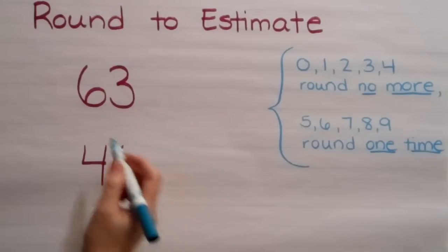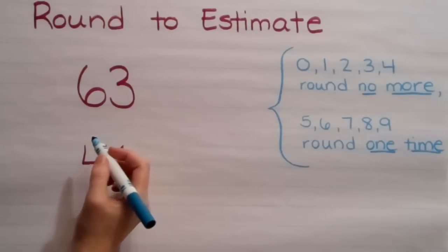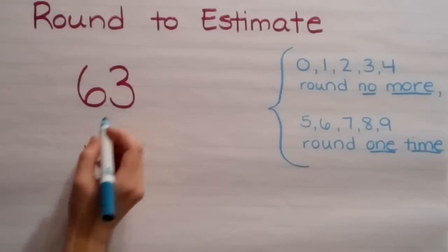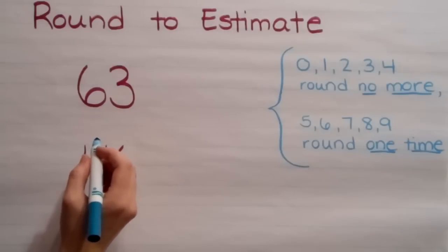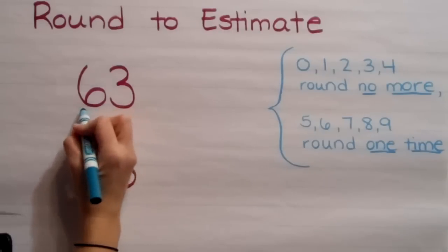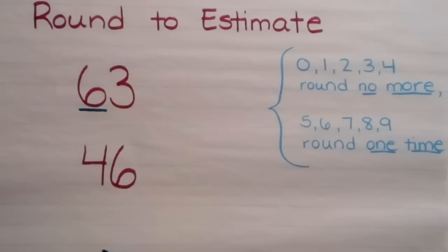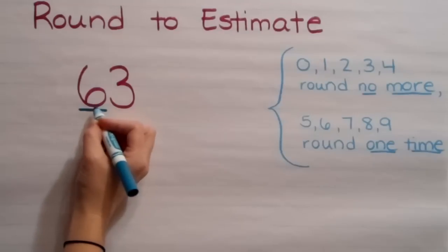Alright, when you're rounding a number, in this case I'm going to round to the nearest tens place. The number is 63. Since I'm rounding to the nearest tens place, I'm going to underline my tens place. This place is the place that may change, but it may stay the same.